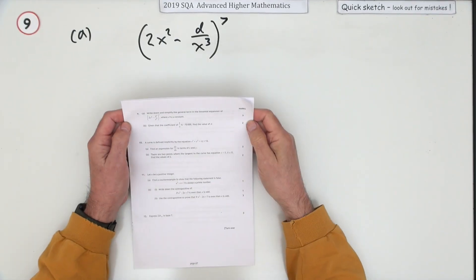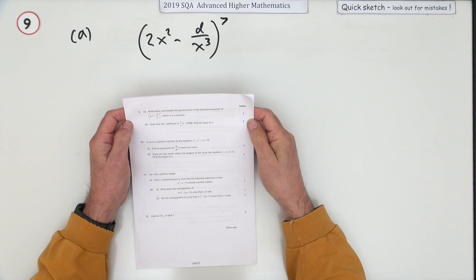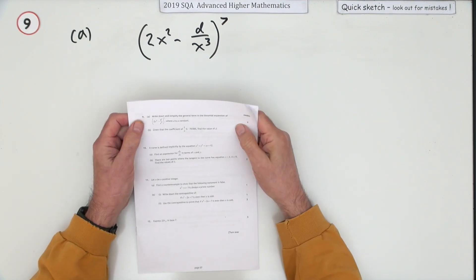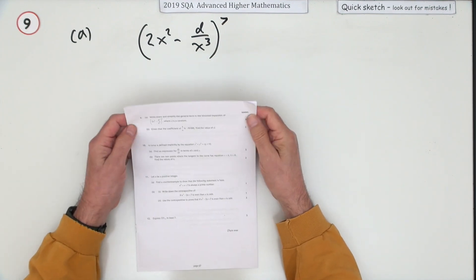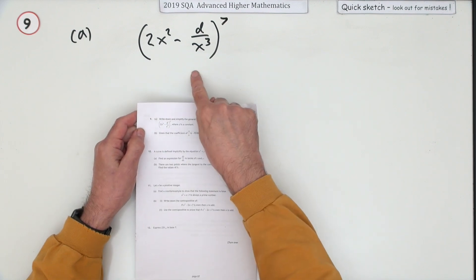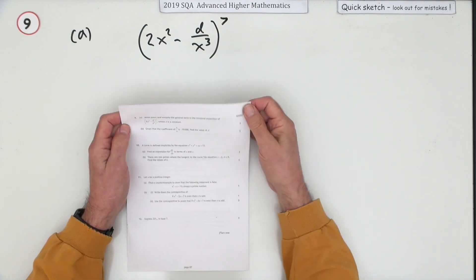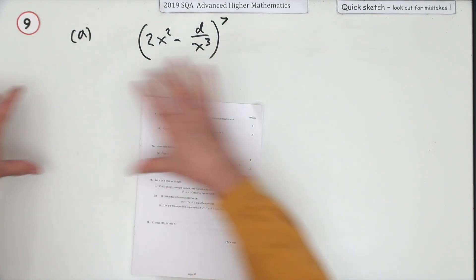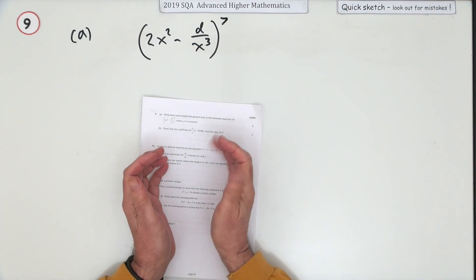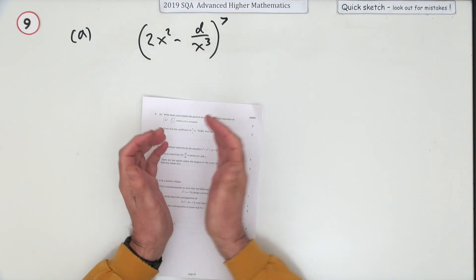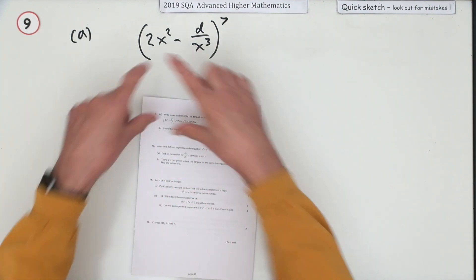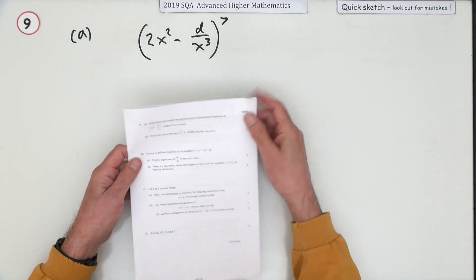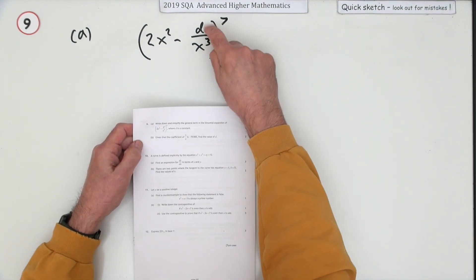Number nine from the 2019 Advanced Term maths — it's the binomial expansion, way down at number nine. It used to be number one. It seems to have broken the pattern of the past four years or so, where it was 'expand it fully, find a particular term.' This year it should have been expanded fully, but it's back to finding a particular term with a little twist.